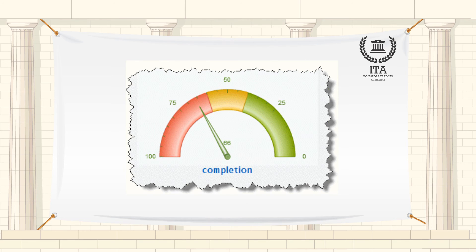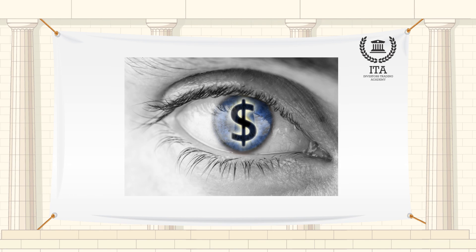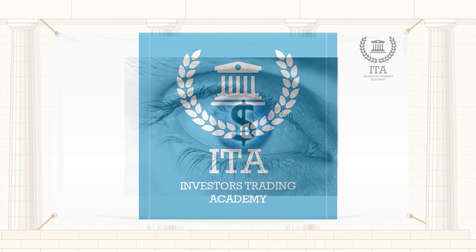Each of these seven indicators is measured on a scale from 0-100, with 50 denoting a neutral reading, and a higher reading signalling more greed. The index is then computed by taking an equal weighted average of the seven indicators.